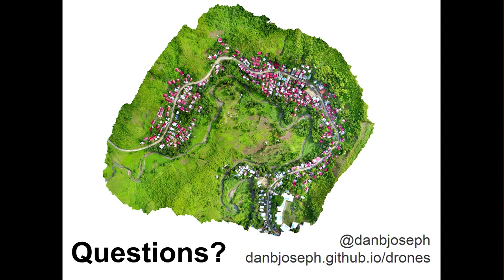Exciting opportunities ahead — it'll be interesting to see how the regulations develop and where this field goes. Beyond the geospatial outputs, just the visual effect of aerial imagery enables powerful storytelling. The Philippine Red Cross, when helping to rebuild in Leyte, used red corrugated iron sheets for the roofing materials they gave to people to rebuild houses and also for homes they constructed. In all the imagery we collected, you can see each house the Philippine Red Cross reached with their recovery efforts by the red roofs. In this particular village, almost every single house benefited from the Red Cross recovery programs. When communicating the impact of programs, that's a powerful visual image. Thank you.